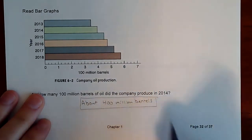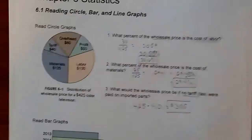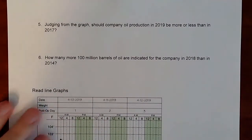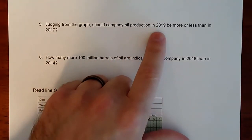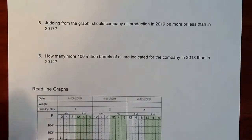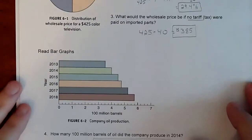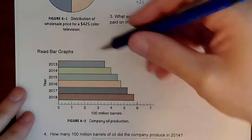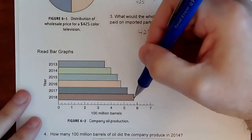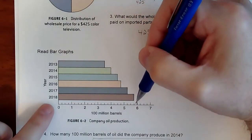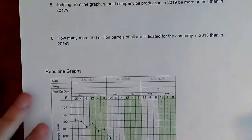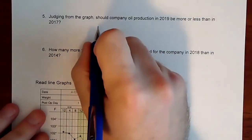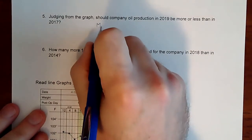Should company oil production in 2019 be more or less than it was in 2017? That's a pattern question. Each year they seem to be producing more and more oil, so if we jump to 2019, the pattern would predict it to be more than in 2017. That's not a guarantee, but that's what the pattern predicts.